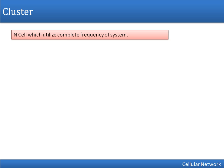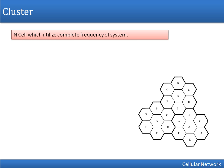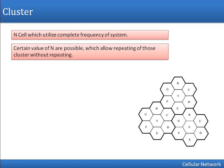So if we are having a pattern of cells, how are we going to calculate cluster size? The size of a cluster can be calculated using the formula: N equals I squared plus I times J plus J squared.